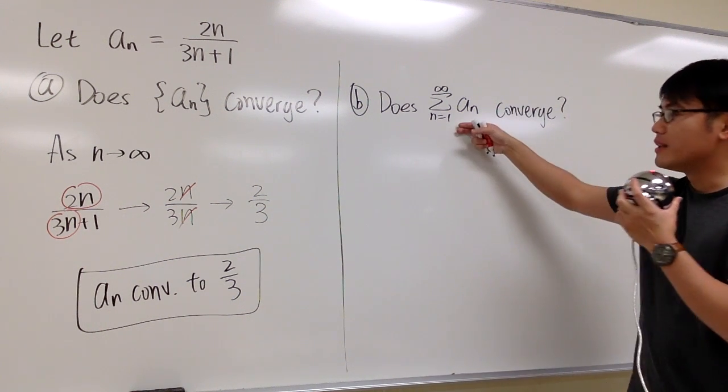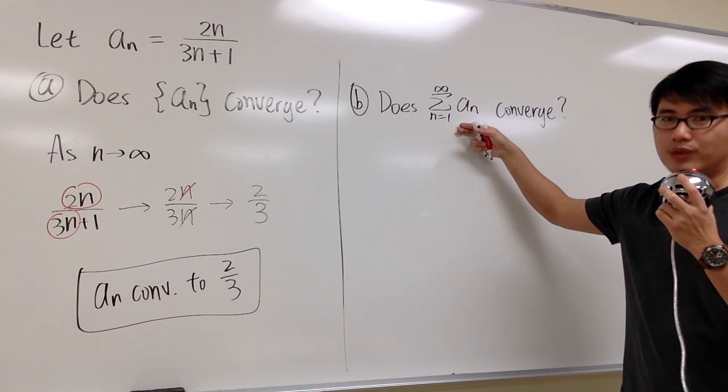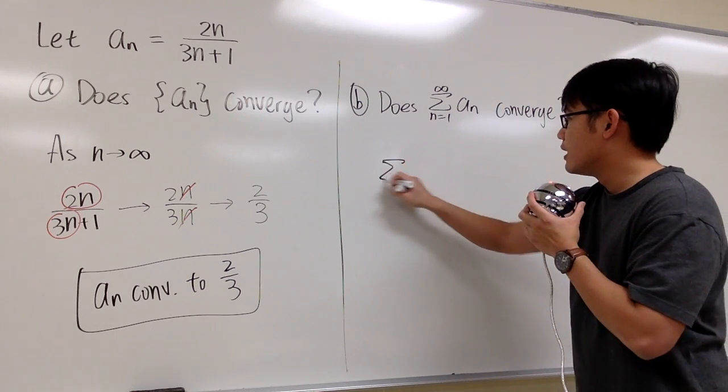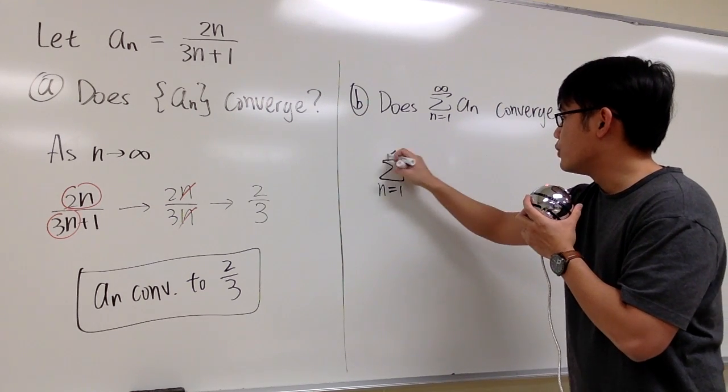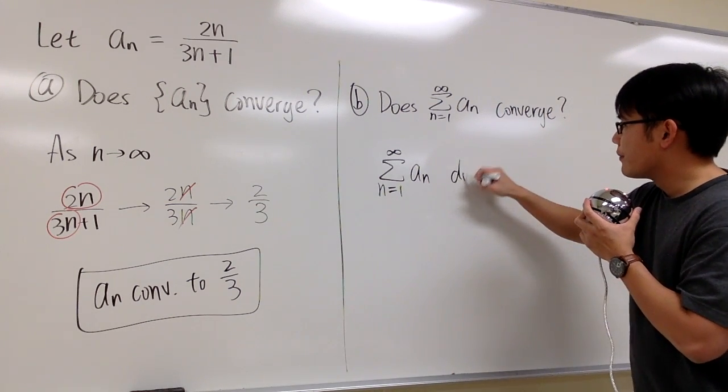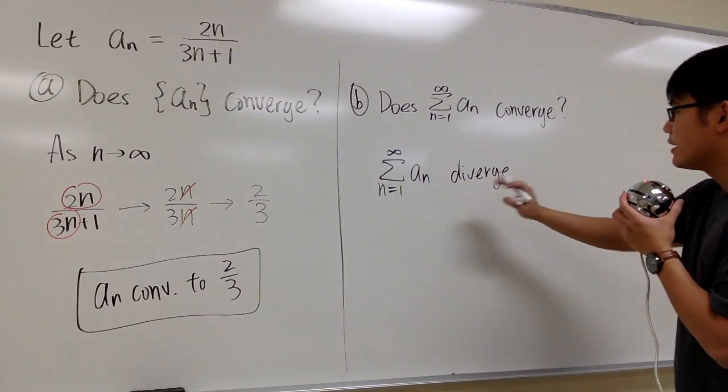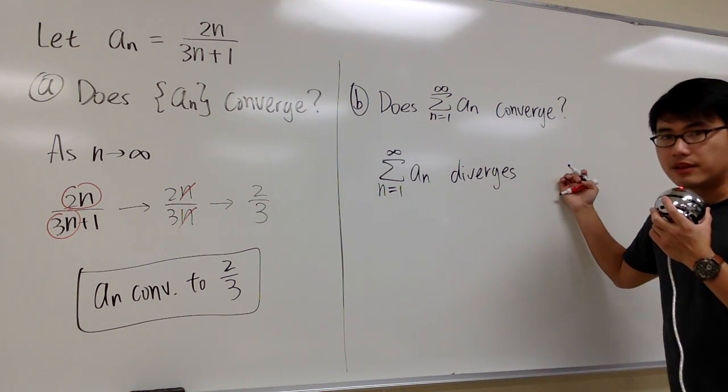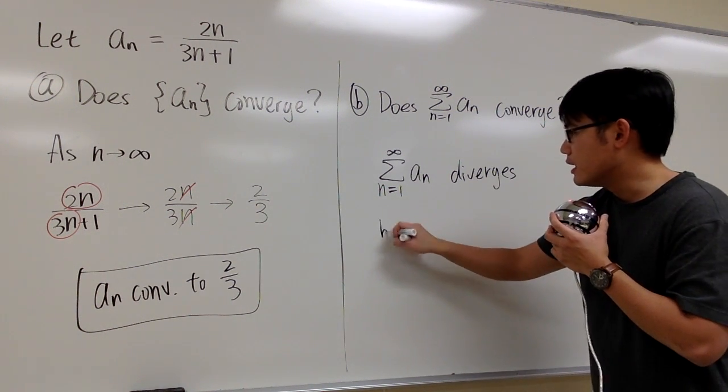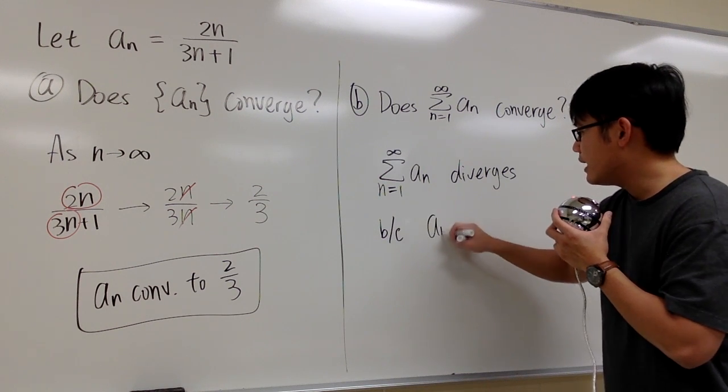this right here diverges because we do not get a finite sum. So we know that we can say the summation 1 to infinity a_n, this right here is a series, this right here diverges, and we technically know that it diverges to past infinity, but we can just say it diverges. And the reason for that is because we know that a_n